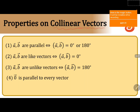For the first property, we consider two vectors A and B which are parallel. If two vectors are parallel, then the angle between vectors A and B is equal to 0 degrees or 180 degrees. Conversely, if the angle between vector A and vector B is equal to 0 degrees or 180 degrees, then A and B are parallel vectors.